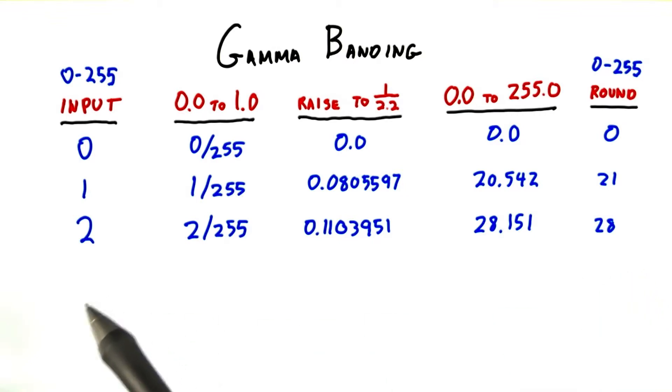At these lower levels, we have to boost the output considerably to get the equivalent gamma corrected value for display. Out of the first 29 output levels, 0 through 28, we've used only 3. Already, there are 26 levels out of 255 we'll never use.